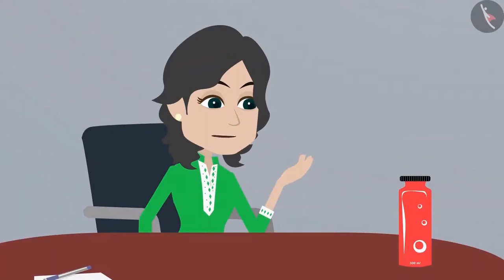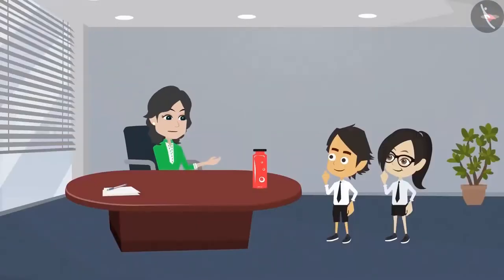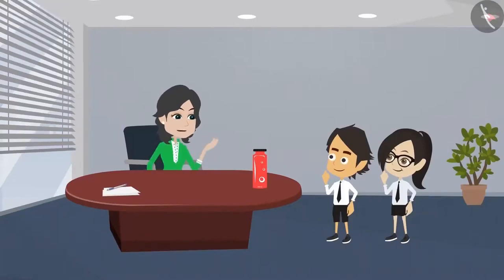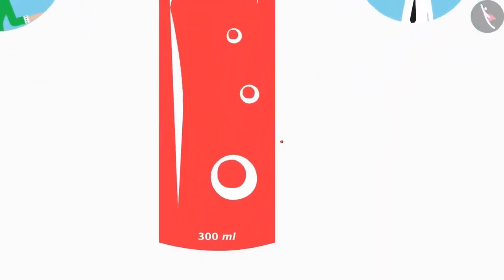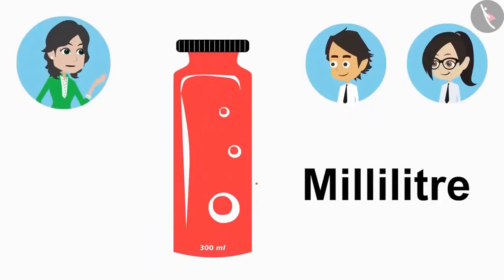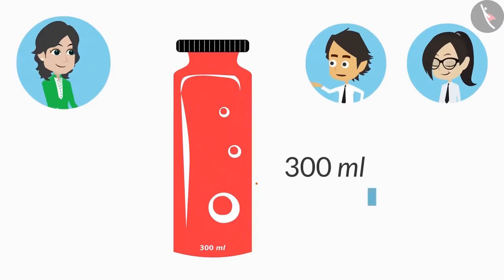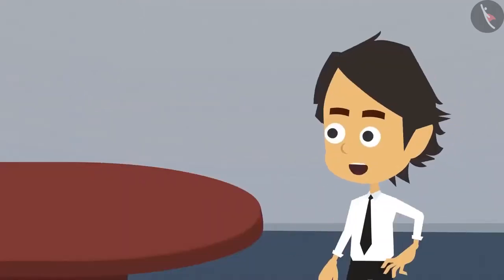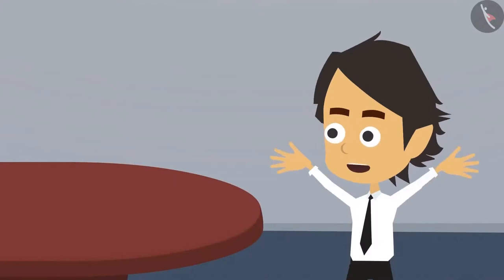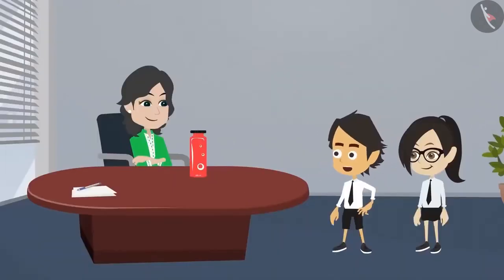This buttermilk is a liquid. Liquid is measured in litre or millilitre. Look, it must be written somewhere on this bottle — how many millilitres of buttermilk does it contain? Here it says that this bottle has 300 millilitres of buttermilk. We use ml to write millilitre. Half of 300 ml will be 150 ml. Which means if we divide the buttermilk into two equal halves, we both will get 150 ml each.